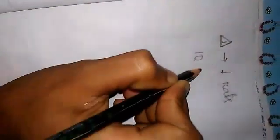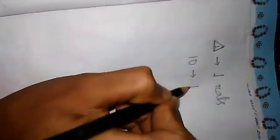Now let's assume a square. 1 square represents 10 rats.